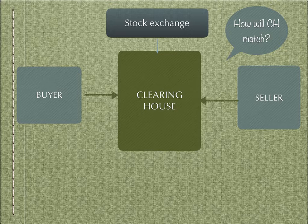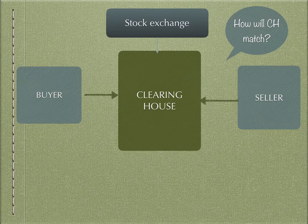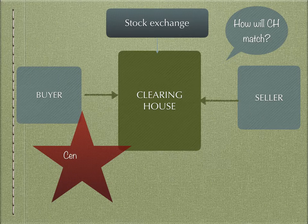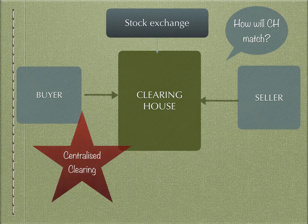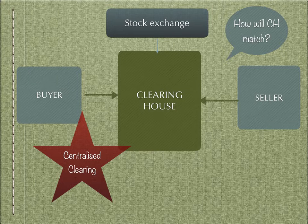The clearing house matches the trade details between the buyer and the seller and sends out the obligations to the buyer's and seller's custodians. In the United States, that clearing house is called the NSCC — the National Securities Clearing Corporation — which is a fully owned subsidiary of the DTC, the Depository Trust Corporation. This concept, where all buyers and sellers make payments into the clearing house, is called centralized clearing, which is now mandatory even for OTC derivative products with the establishment of a CCP — a Centralized Clearing Counterparty.